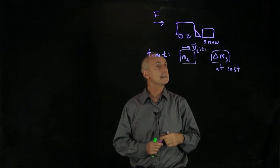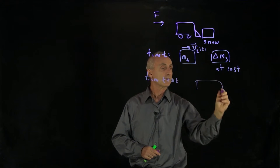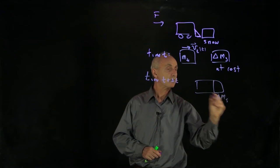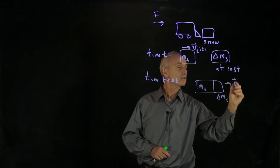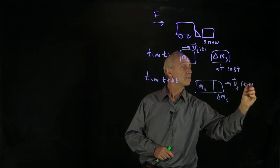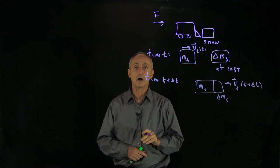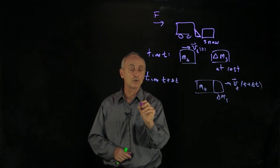So now what happens at time t plus delta t? Well, the truck has picked up the mass of the snow. And the truck has now changed its speed. So that's at time t plus delta t. And now we want to write down our momentum law. So we have our external force.